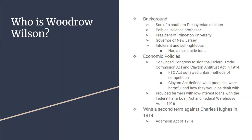He also gets the Clayton Antitrust Act, which goes along with the Sherman Antitrust Act. What the Clayton Antitrust Act does is define and list specific activities that were illegal — things that businesses could not do.